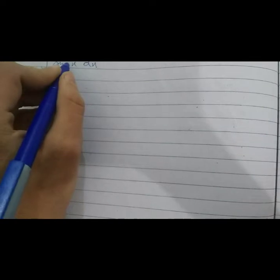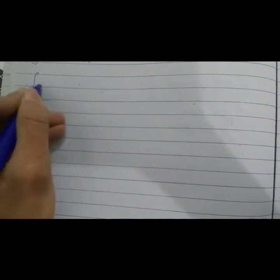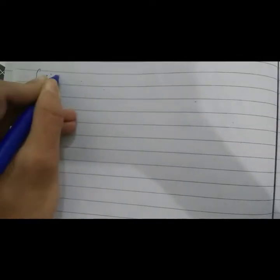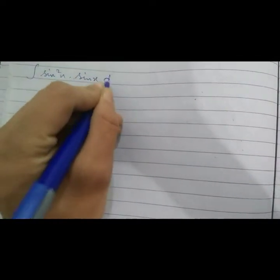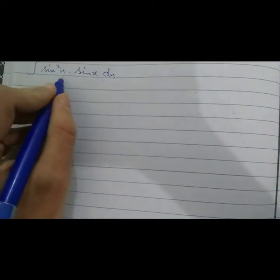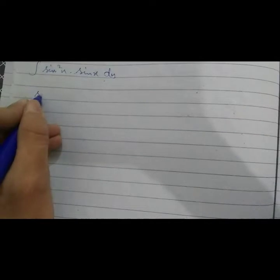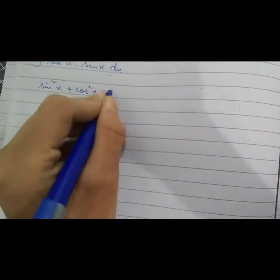We are seeing here that the power is odd, so we have to break it into sine square x and sine x. We have to substitute here the identity of sine square x, which is sine square x plus cosine square x equals 1.